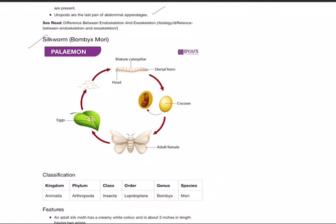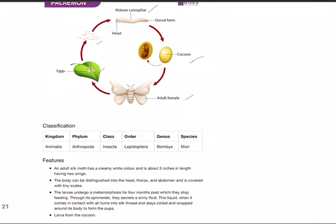Next one: Bombyx mori, the silkworm. You need to draw the diagram of the adult butterfly, eggs on mulberry leaves, the caterpillar, and cocoons. In Mysore region, this is very famous for Mysore silk. Classification: Kingdom Animalia, Phylum Arthropoda, Class Insecta, Order Lepidoptera, Genus Bombyx, Species mori.